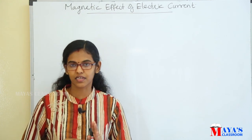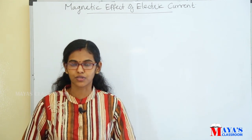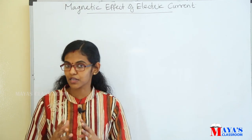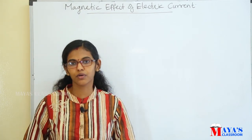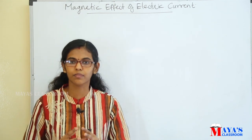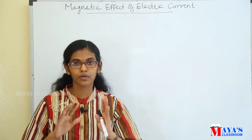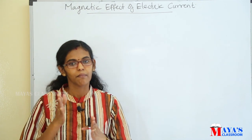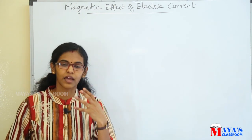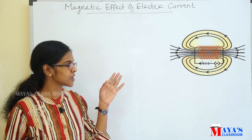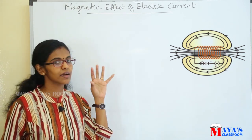We discussed in the earlier class that a magnetic field is created when current flows, and we call the number of turns a solenoid. When the solenoid has electricity flowing through it, it is magnetized — it creates a north pole and a south pole.